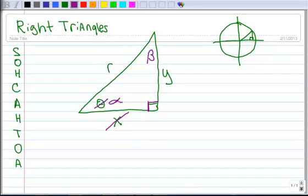In relation to the angle theta, rather than call this side x, we're going to call this the adjacent side in relation to alpha, because it's the one next to it. In relation to alpha, we're going to call this the opposite side, because it's opposite alpha. And instead of calling this radius, we're going to call this the hypotenuse.